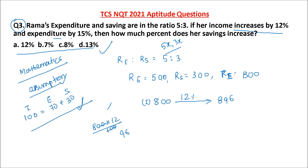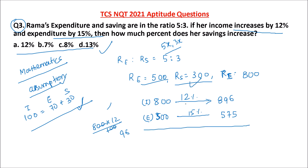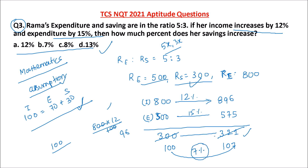Expenditure increases by 15%. Expenditure was 500, so 15% of 500 is 75. New expenditure becomes 575. New savings equals new income minus new expenditure: 896 minus 575 equals 321. Earlier savings was 300, now it is 321. To find the percentage increase: if I divide 300 by 3 it becomes 100, and dividing 321 by 3 gives 107 — so the savings increased by 7%. Other students would compute 321 minus 300 equals 21, divided by 300, but by assuming smartly you get 7% directly.